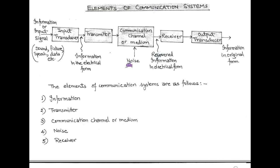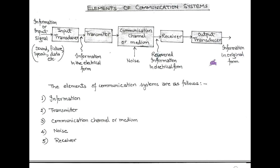While transmitting information over a communication channel, there may be noise. This noise is additive in nature, so the information is transmitted over a communication channel along with some noise. This noisy information is received by a receiver. The receiver is also an electronic circuit, but here there is a process called demodulation. Demodulation is the inverse of modulation. After receiving information in electrical form, an output transducer is used to get the information back in its original form.